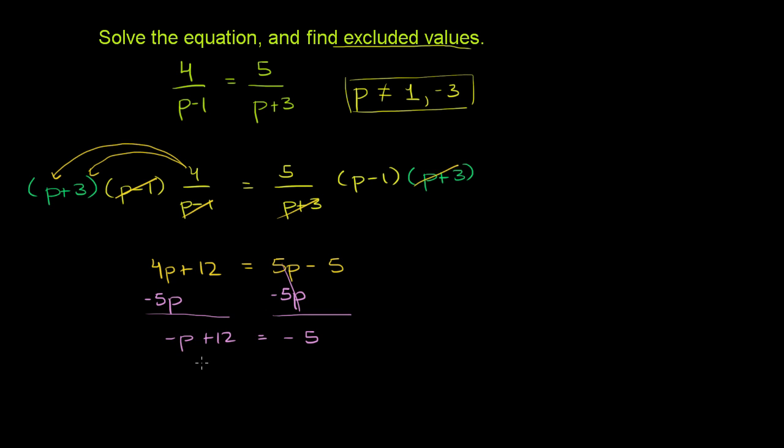And then we can subtract 12 from both sides. And we get, these cancel out, we get negative p is equal to negative 5 minus 12 is negative 17.